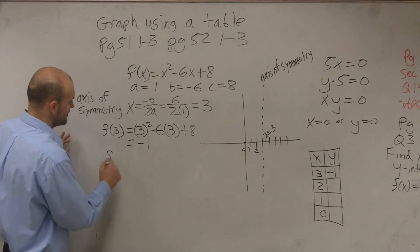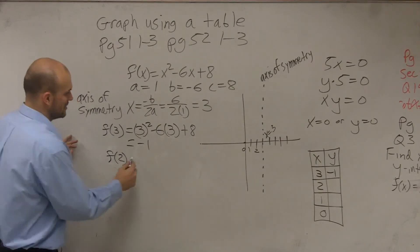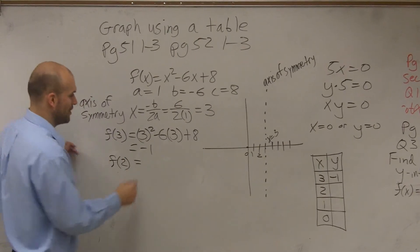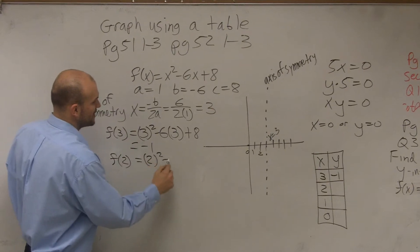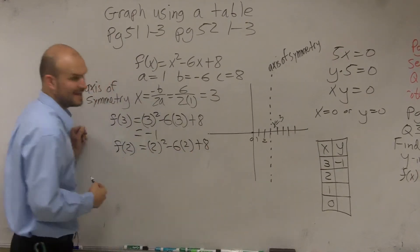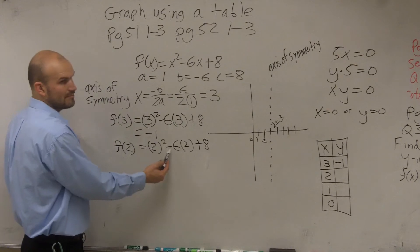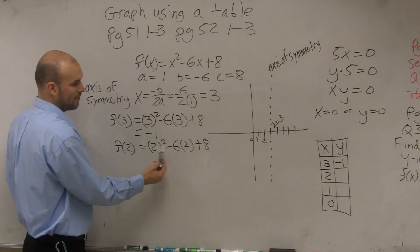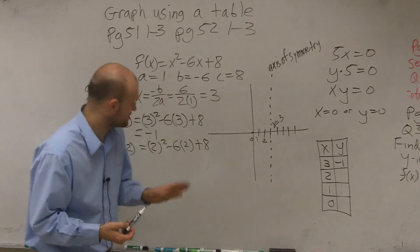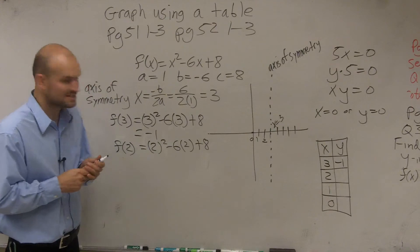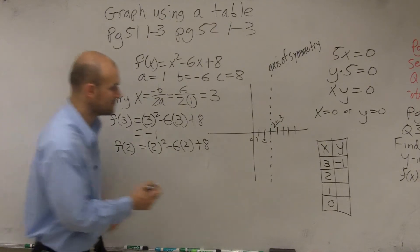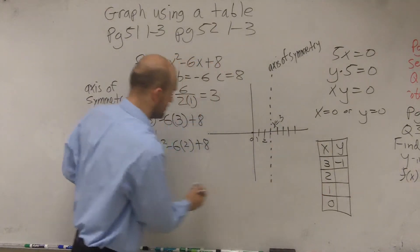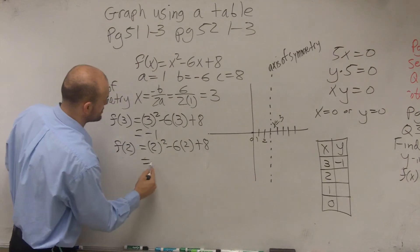The next one is let's plug f of 2. So now we plug in 2 in for our x. So we have 2 squared minus 6 times 2 plus 8. Here we have 4 minus 12 is negative 8, plus 8 is going to give us 0. So at 2, this equals 0.